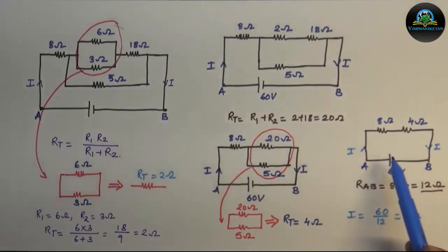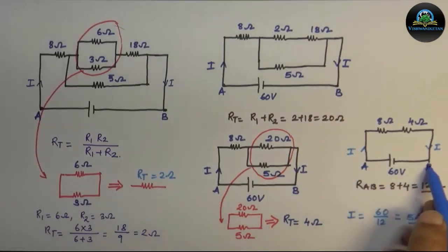This is the same current flowing through the 8 ohm resistance. So after solving the problem, we conclude that the effective resistance of the given circuit is 12 ohm, and the current through the 8 ohm resistance is 5 ampere, flowing from A to B.